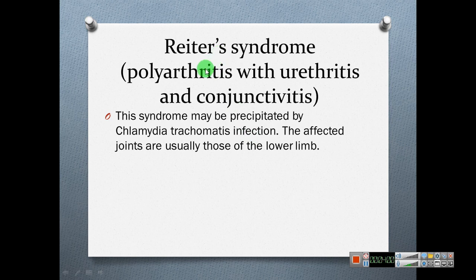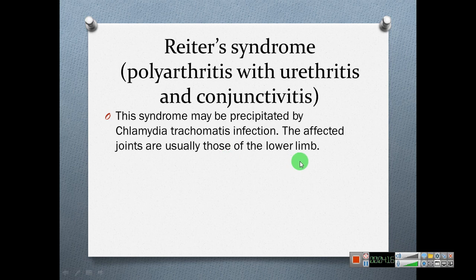Reiter's syndrome involves polyarthritis with urethritis and conjunctivitis. This syndrome may be precipitated by Chlamydia trachomatis infection. The affected joints are usually those of the lower limb.